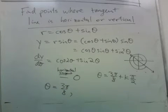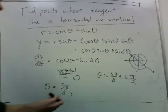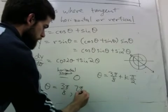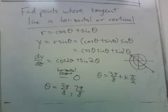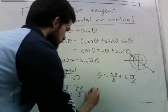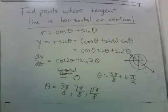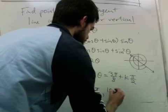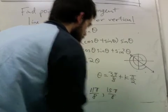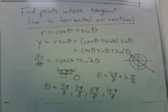When k is 1 we get 7π over 8. When k is 2 we get 11π over 8. When k is 3 we get 15π over 8.